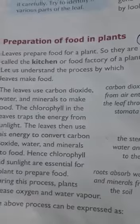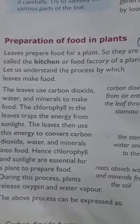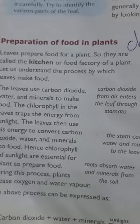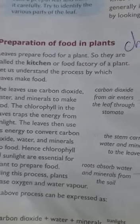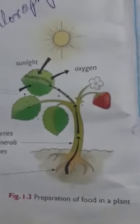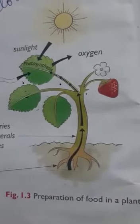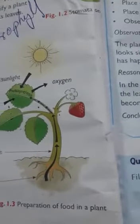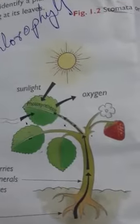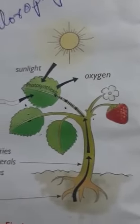Leaves prepare the food for a plant, so they are called the kitchen or food factory of a plant. Just as we need ingredients to prepare food in our kitchen — water, fire, and others — plants also need ingredients to prepare their food.